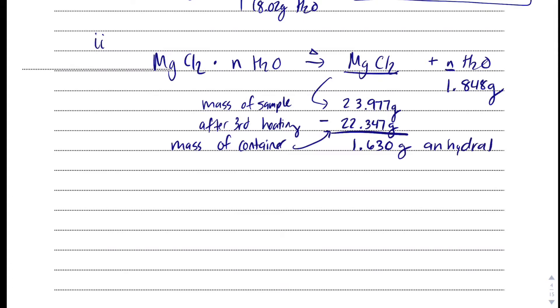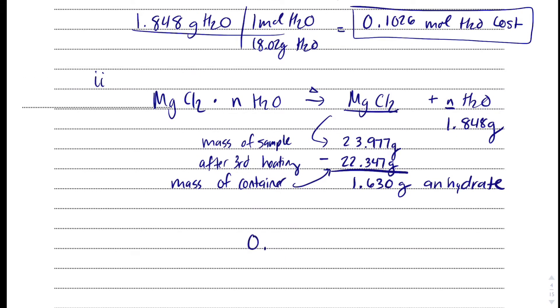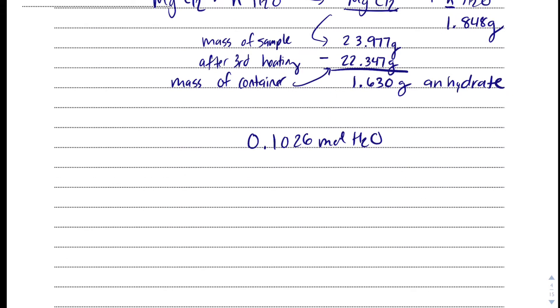But we want the formula of the hydrated compound. So, if you remember those steps, get moles, and then divide by small. We already have, what was it, 0.1026 moles of H2O, and here we need to take 1.63 grams of magnesium chloride. We'll get the molar mass of magnesium chloride as 95.20 grams of MgCl2 for every 1 mole of MgCl2. And when we do that, we get 0.01712 moles of MgCl2.